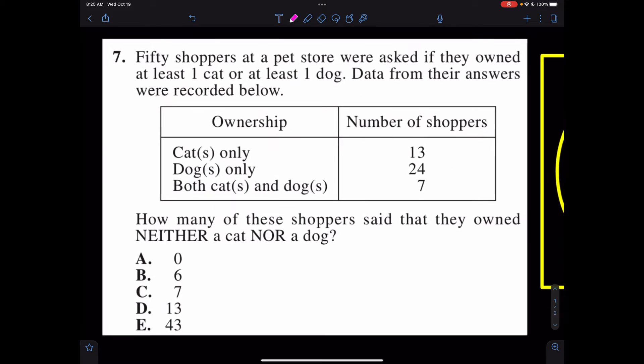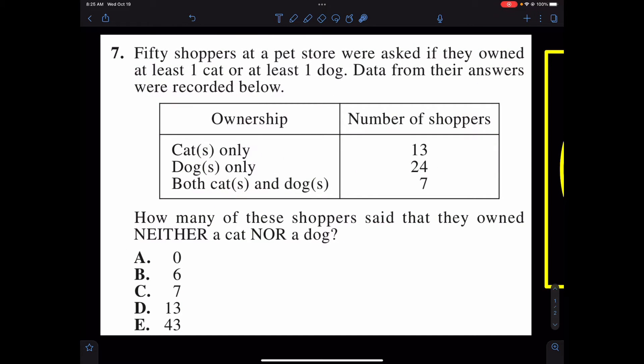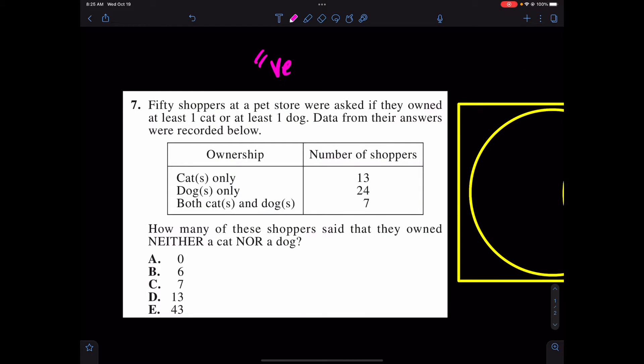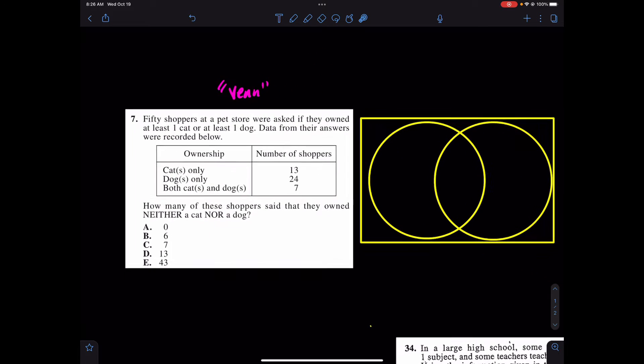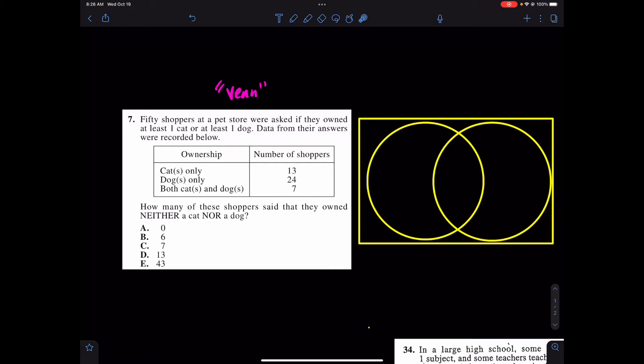First of all, I'll let you read number seven. It says 50 shoppers at a pet store - cats only, dogs only, both cats and dogs. How many of these shoppers said that they own neither a cat nor a dog? Well, I'm already in that mindset of a Venn Diagram. When I see these words both, how many people own both cats and dogs, how many people only own cats or only own dogs, or really own neither? This is that skill of a Venn Diagram, and a Venn Diagram allows us to organize our thoughts. Without a Venn Diagram, these questions become very difficult.